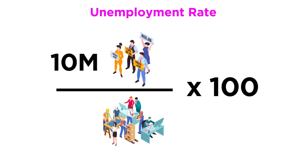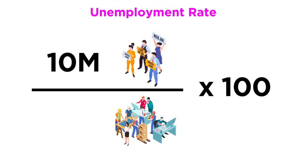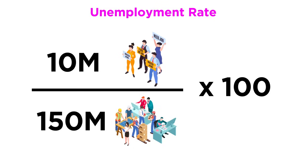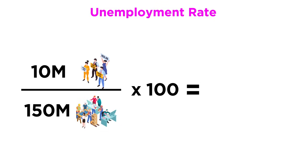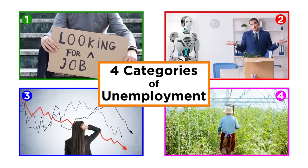For example, if there are 10 million unemployed people in a country and 150 million in the labor force, you'd have an unemployment rate of 6.67%. However, we must understand that unemployment can occur for different reasons. Economists generally look at four categories of unemployment: frictional, structural, cyclical, and seasonal.